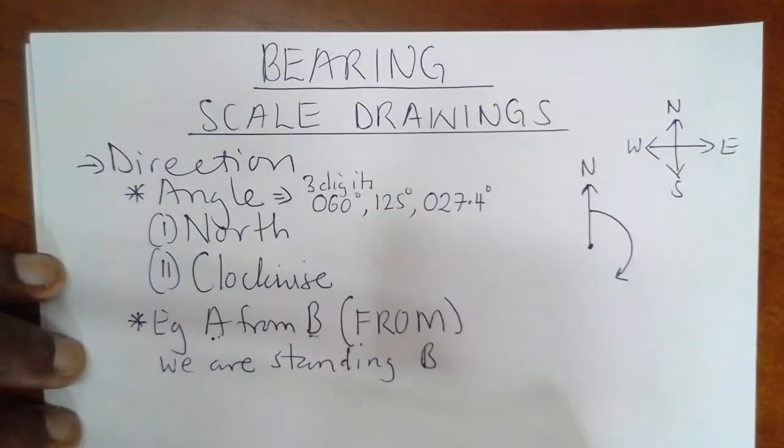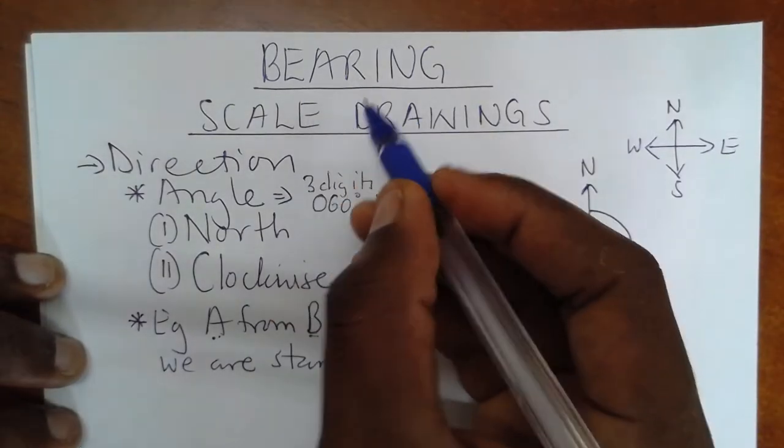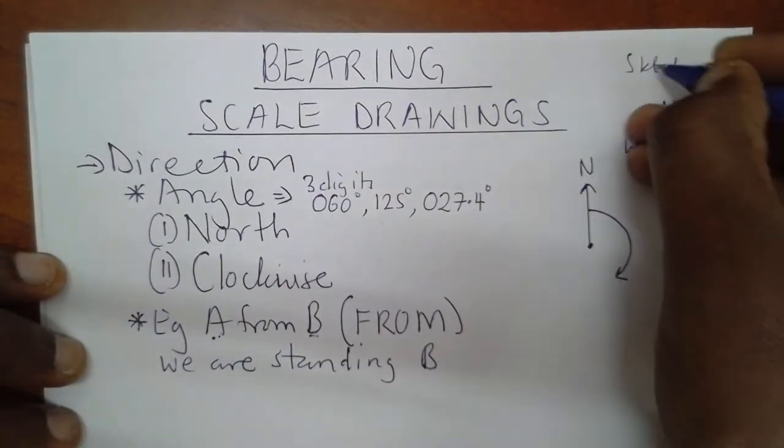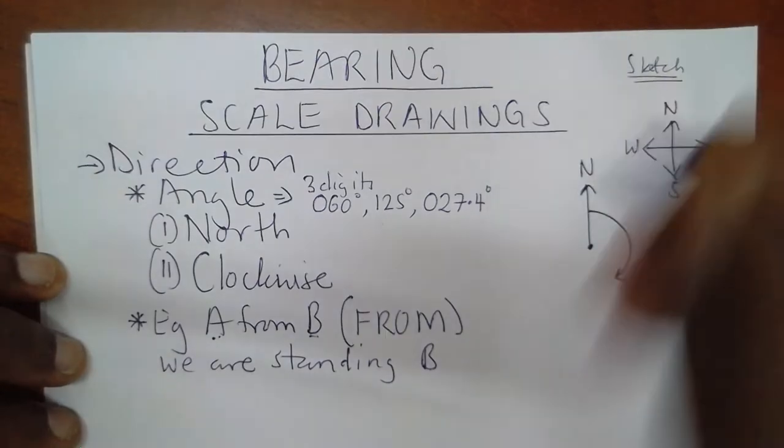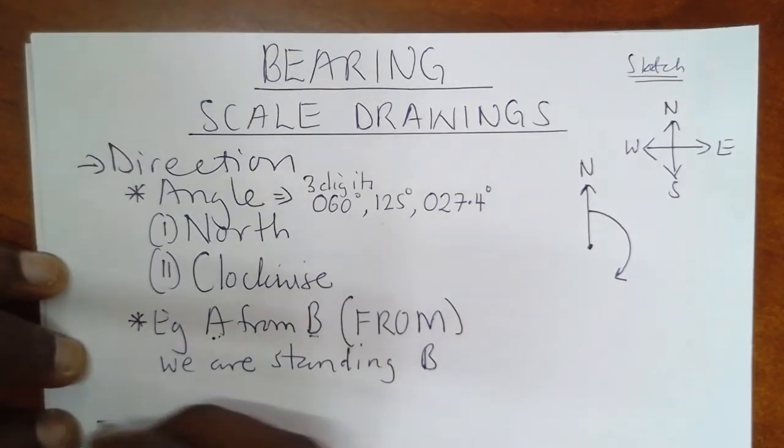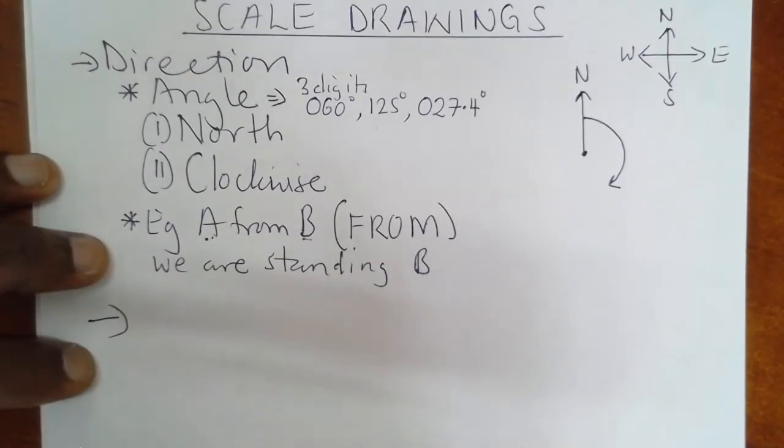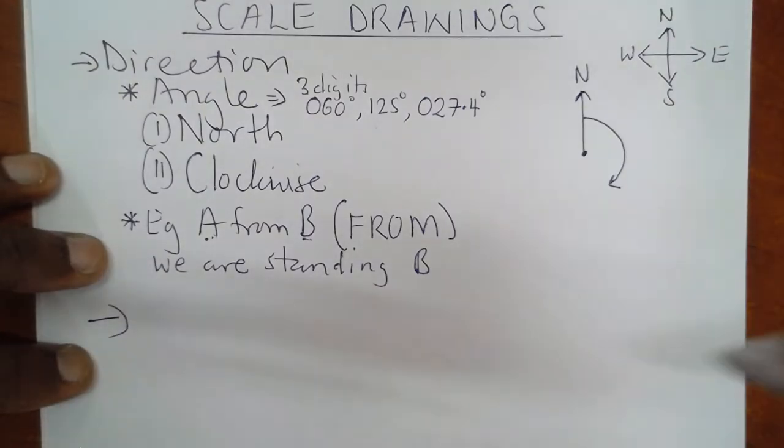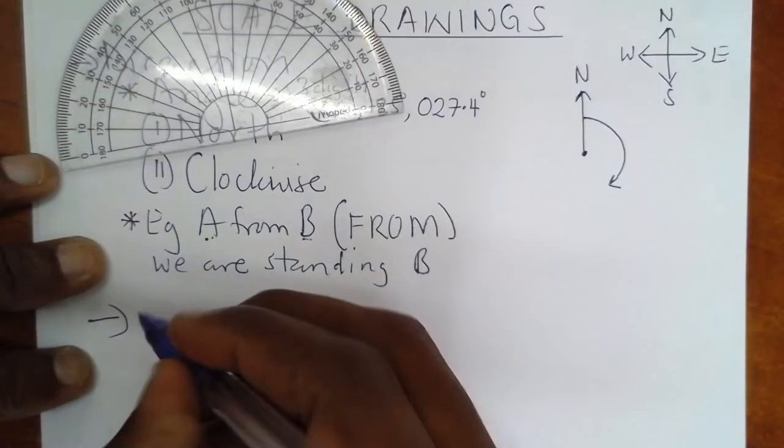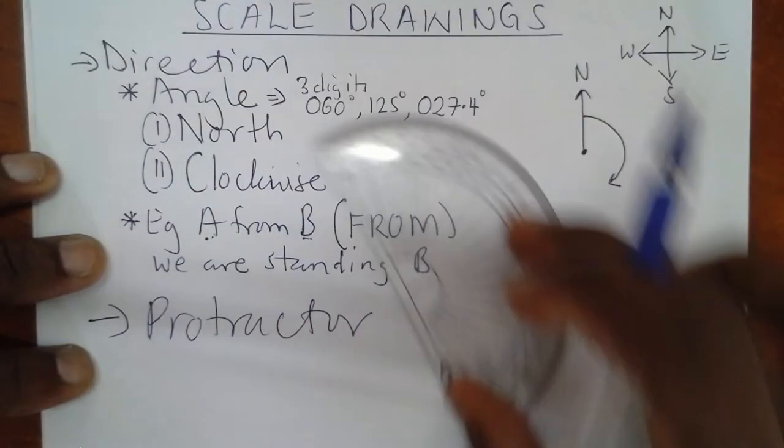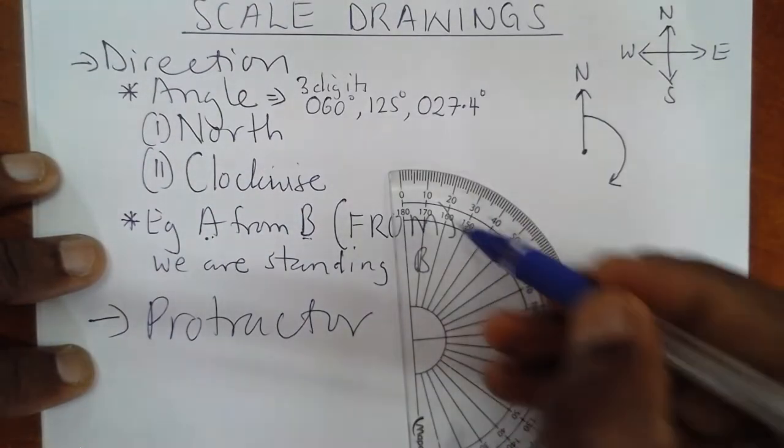Now we have two types of bearing. We have bearing under a sketch. Remember, sketch. A sketch is a drawing without using scale. But today we are going to look at scaled drawings. So for us to do the scale drawing, we need the help of this item here. The protractor will help us a lot in measuring the angles.